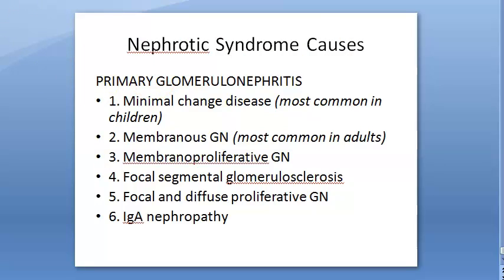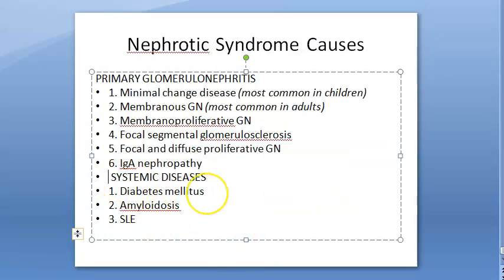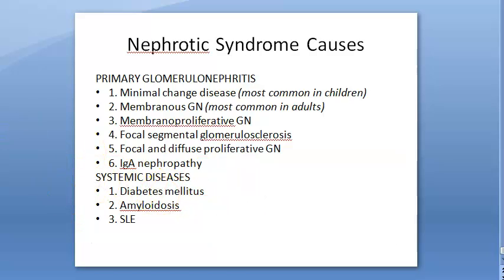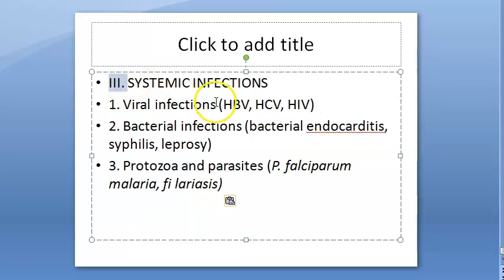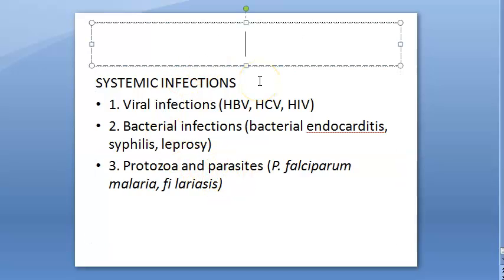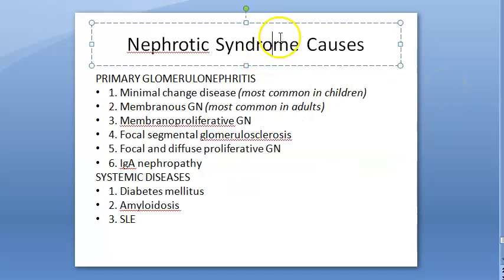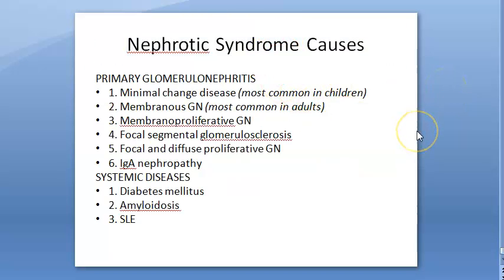The next set of causes: the person can have systemic diseases like diabetes mellitus, amyloidosis, and SLE — systemic lupus erythematosus. This person may also have infections: viral infections, bacterial infections, or protozoal/parasitic infections. So many causes are there.